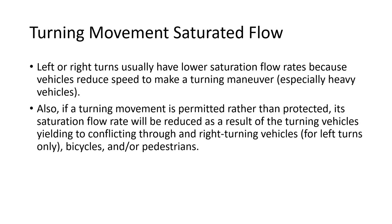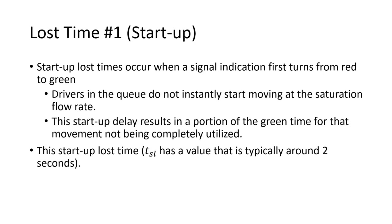Left and right turns at a traffic signal are not going to have the same saturation flow rate — you would not use 1,800 or 1,900 for a left turn or right turn lane. People go a fair bit slower to make those turns, so your flow rate will be much lower. Through lanes might be 1,800–1,900 vehicles per hour per lane theoretically, but left and right turn lanes are never going to be near those numbers.